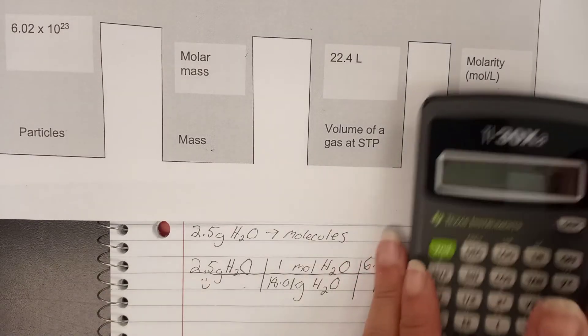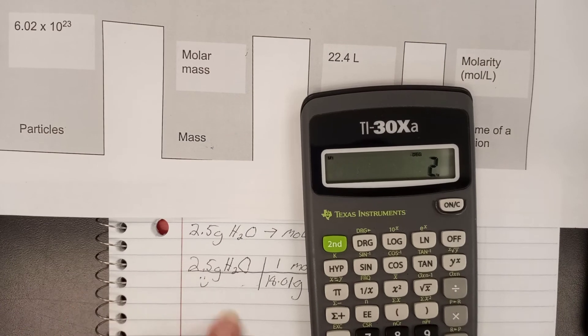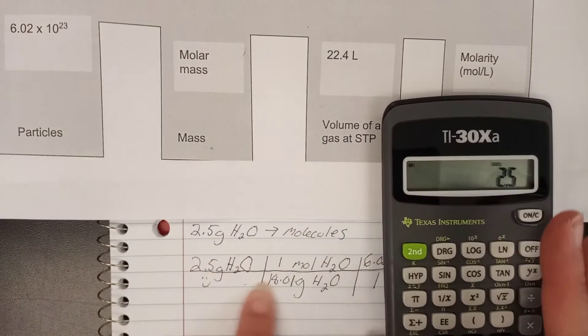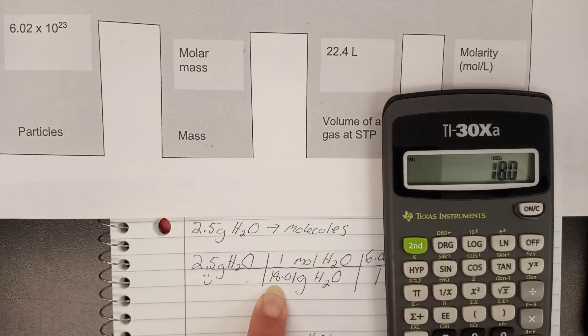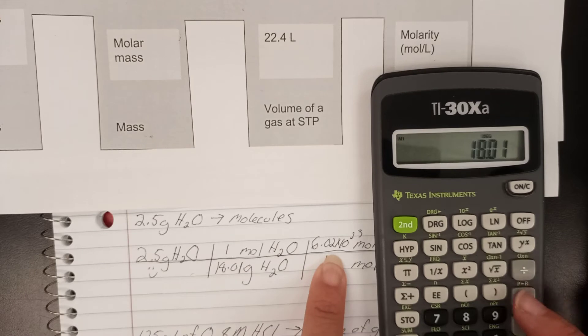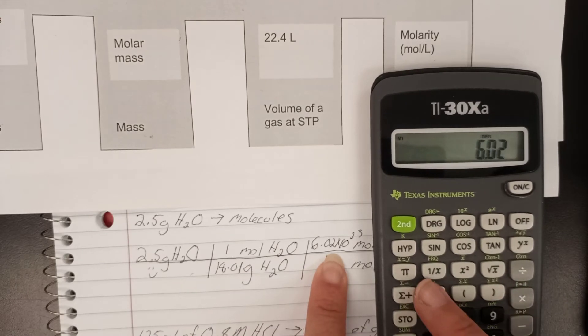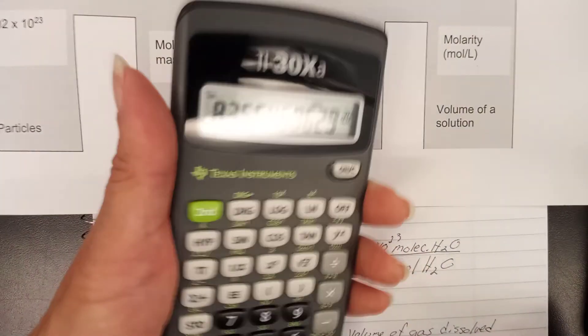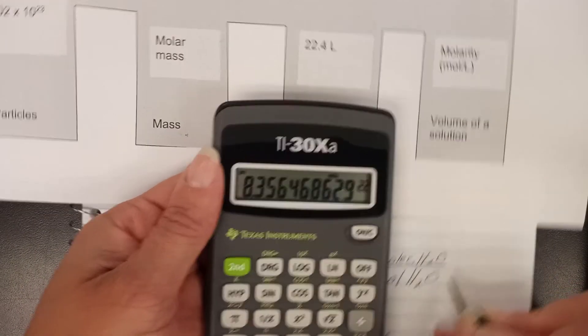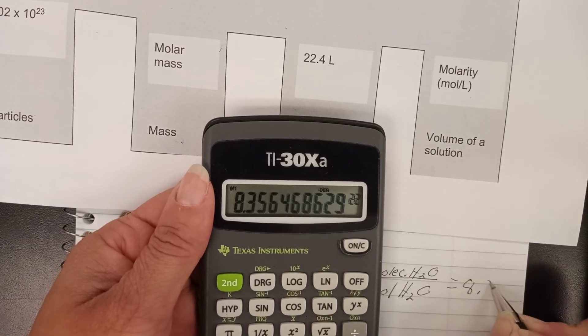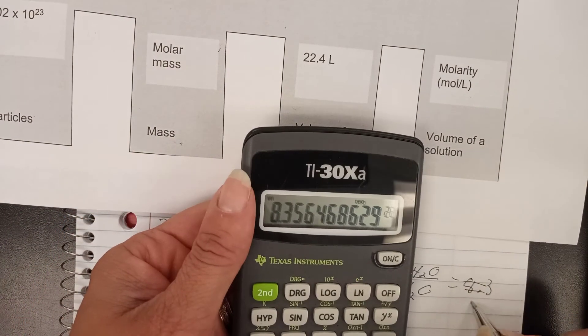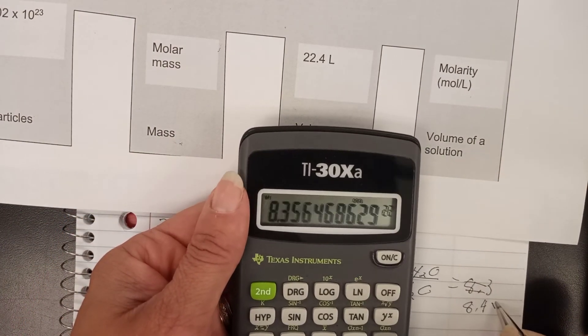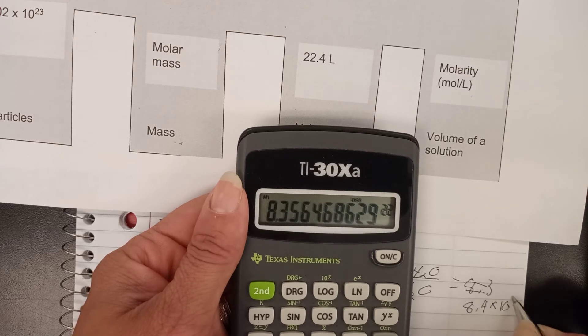We're going to get out our calculators. I'm going to push 2.5 times one, I'm not putting in, divided by 18.01, times 6.02, and I'm going to push this EE button 23 equals. My answer there is 8.3, and we'll run this to significant figures, so 8.4 times 10 to the 22nd.